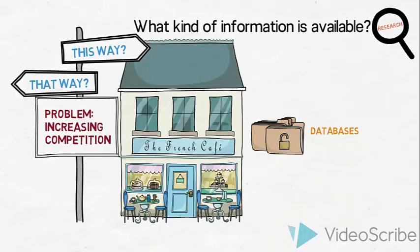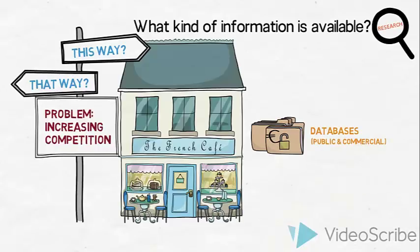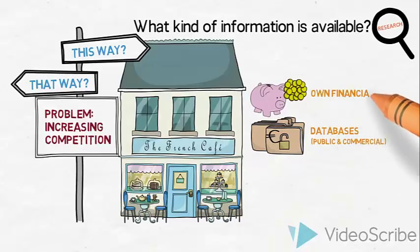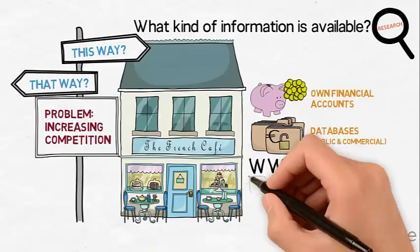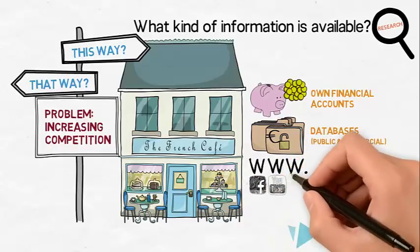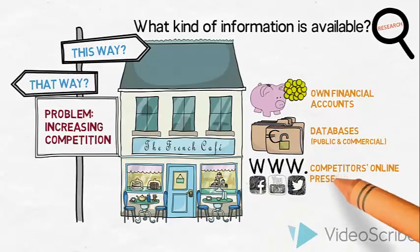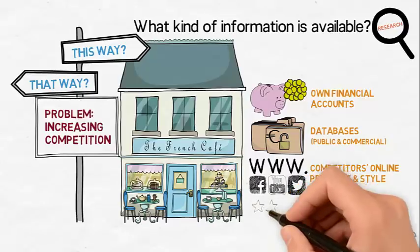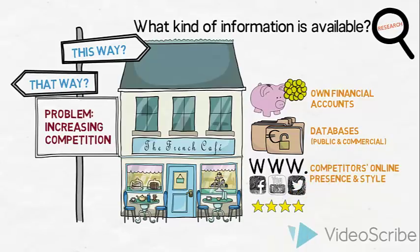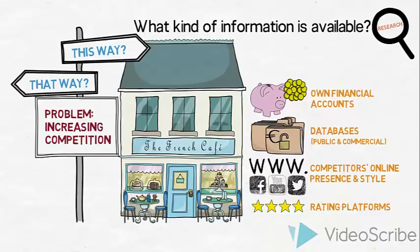Some commercial industry databases are open for more detailed company information at a fee. To compare with their own internal situation, they could gather information from their own financial accounts. They could visit the competitors' websites, social media sites, and perform online searches to collect information about the different competitors' online presence and communication style. They could also access TripAdvisor or similar platforms to find out how customers review the competitors.